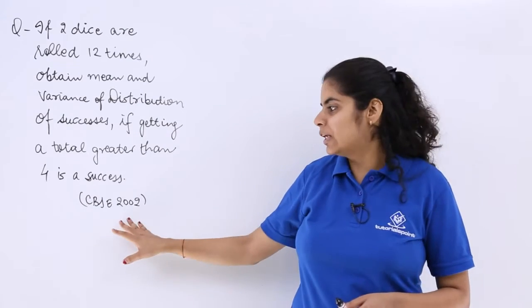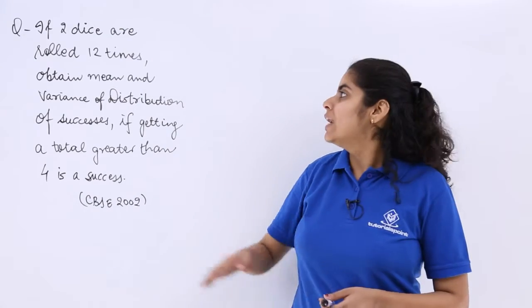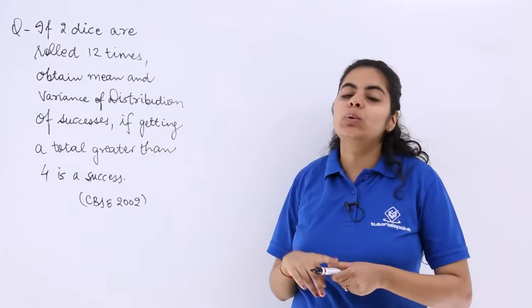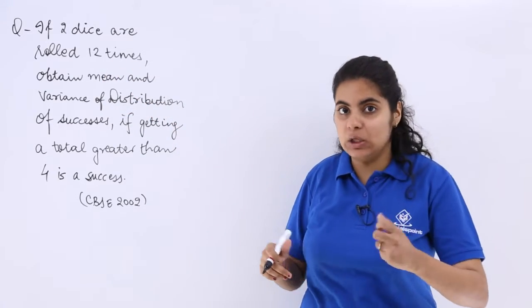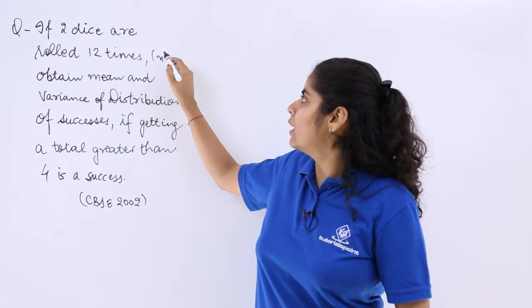Let's see this question asked in the examination of CBSE 2002. It says if 2 dice are rolled 12 times, so the number of trials are 12, means n is given to you as 12.